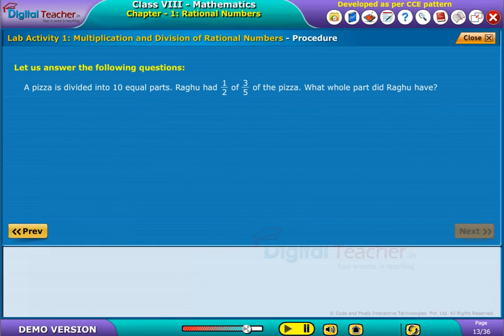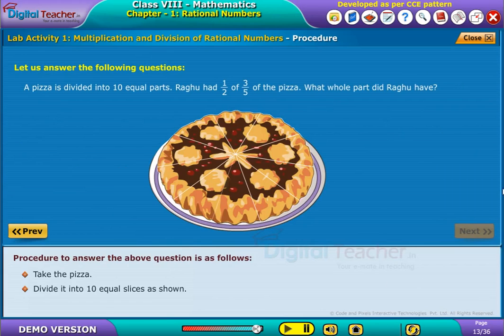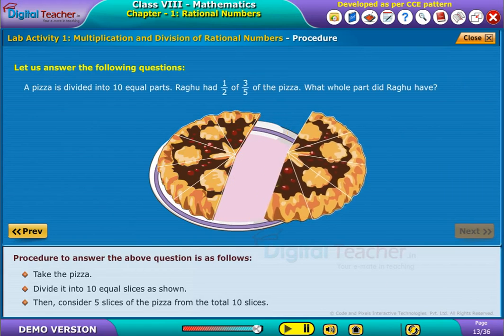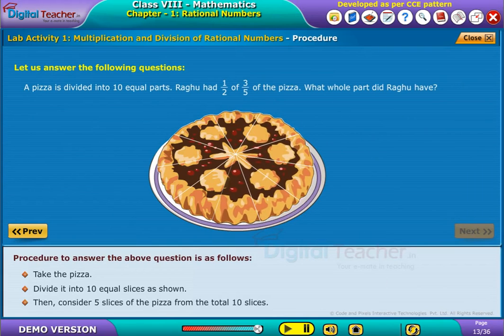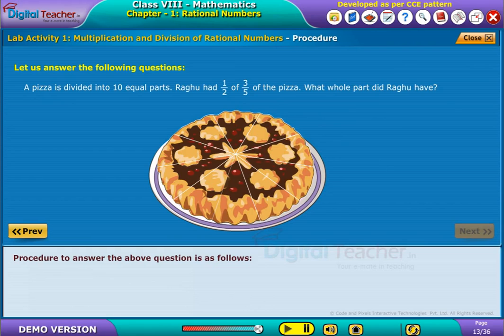A pizza is divided into 10 equal parts. Ragu had one. Then consider five slices of pizza from the total 10 slices. Now, out of five slices of pizza, consider three slices.